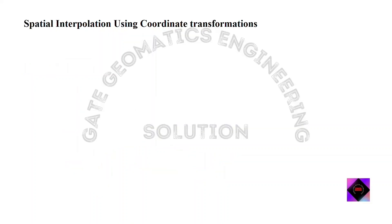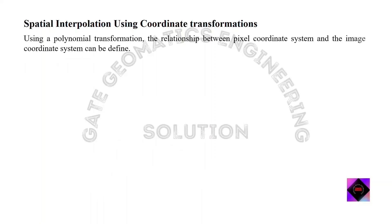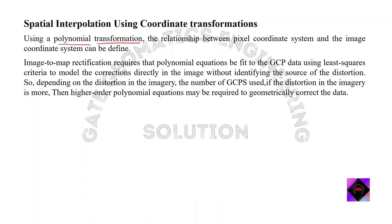The relationship between the pixel coordinate system and the image coordinate system can be defined using polynomial transformation. Image to map rectification requires polynomial equations to be fit to the GCP data using least squares criteria, to model corrections directly in the image without identifying the source of distortions. Depending on the level of distortion in the imagery, different order polynomial equations may be required — higher distortion requires higher order polynomials.